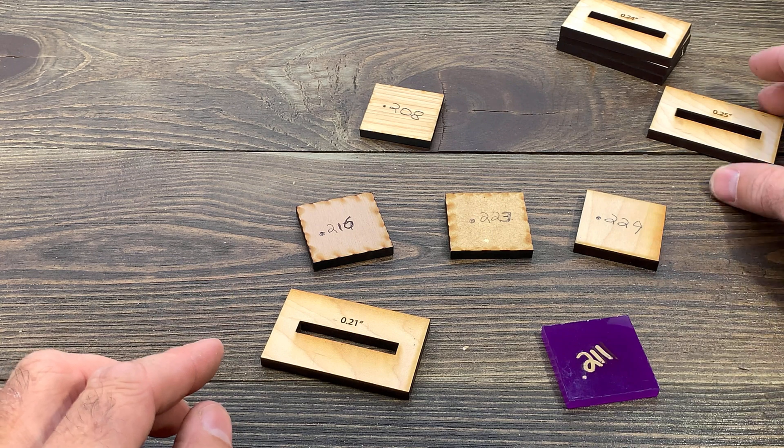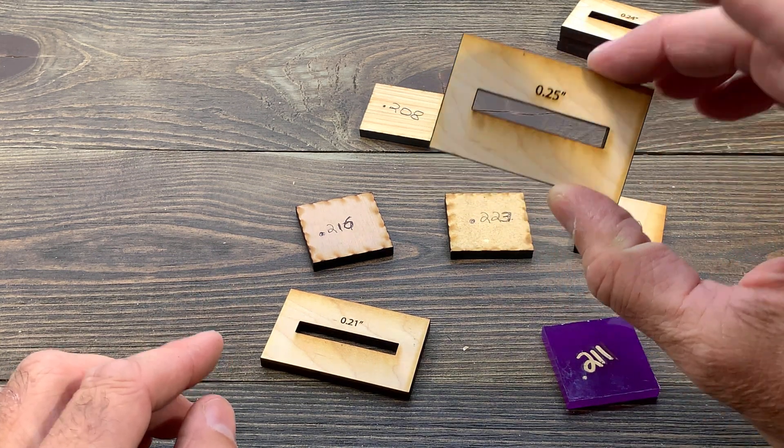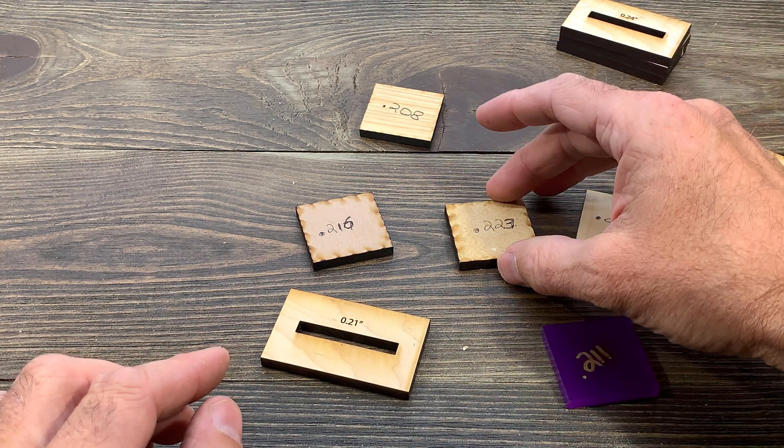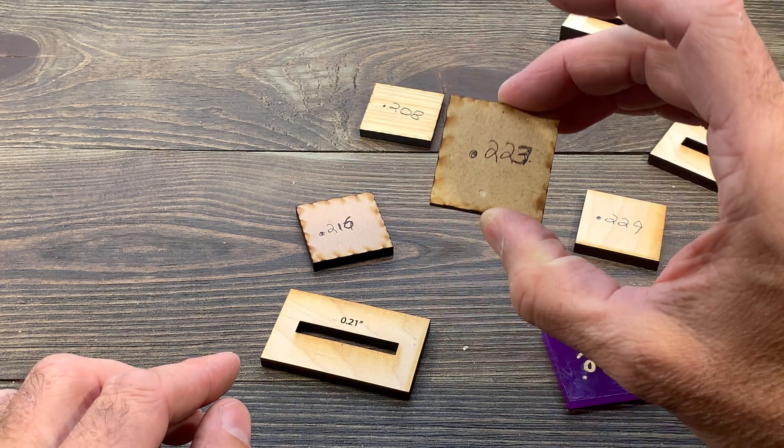They either have got to choose A, to make the slots at 0.25 and know that nothing's going to fit. Everyone's going to have to adjust. Or they make it for the material that they have on hand, once again, knowing that everyone's going to have to adjust.